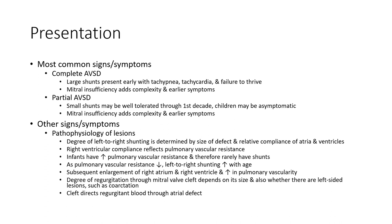There is subsequent enlargement of the right atrium, right ventricle, and increased pulmonary vascularity. The degree of regurgitation through the mitral valve cleft depends on its size and whether there are left-sided lesions, such as coarctation. The cleft can directly recirculate blood through the atrial defects.